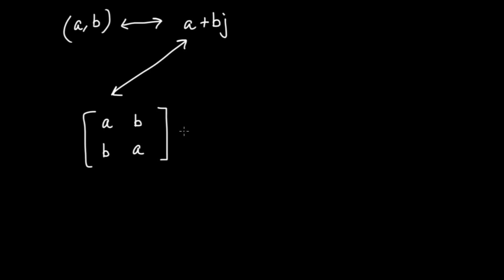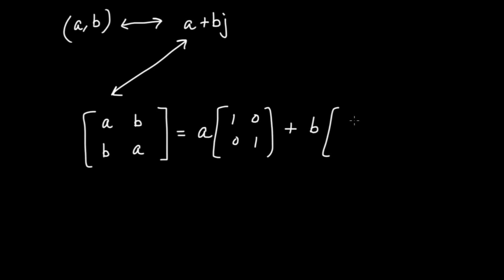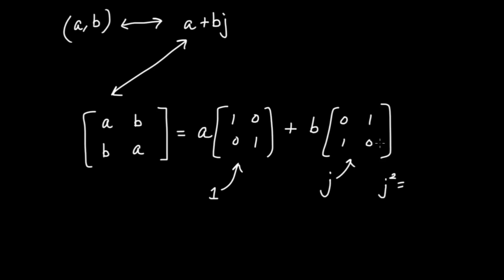With recognition of the form of this matrix, we can start breaking it apart. We notice that the A's go down the diagonal, so I could factor out an A and just write a 1 where those A's go — that's just the identity matrix [[1, 0], [0, 1]]. And I can factor out the B, writing a 1 where those B's go. So any matrix of this form can be written as A copies of the identity matrix, which I'll designate with a stylized 1, plus B copies of this matrix, which I'll give the name J — the matrix [[0, 1], [1, 0]].